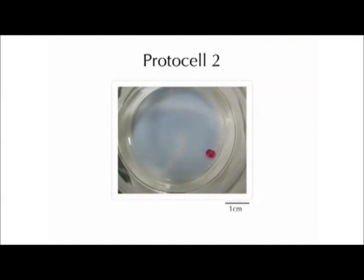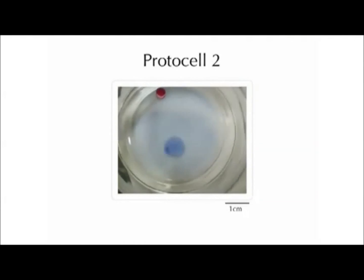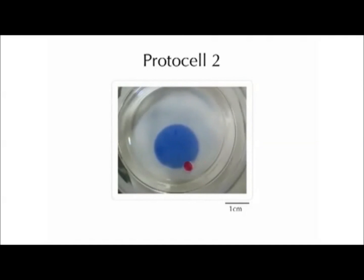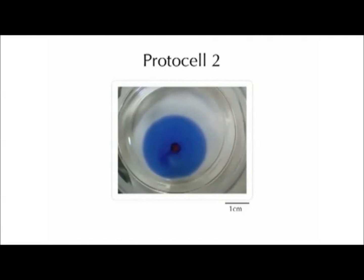We take the same moving protocell and put it in another experiment: get it moving, then add some food to the system — you'll see that in blue. The protocell moves, encounters the food, reconfigures itself, and is actually able to climb to the highest concentration of food in that system and stop there.